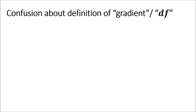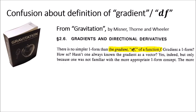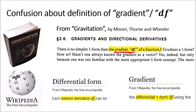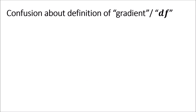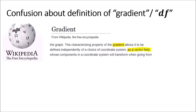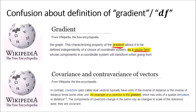Unfortunately there's some confusion in the math and physics community about what these operators are actually called. Some sources, like the textbook called Gravitation, actually call df the gradient of f, while various articles on Wikipedia give df different names like the exterior derivative and differential one form. To add to the confusion, in some articles Wikipedia calls the gradient a vector field and in other articles it calls the gradient a covector field.